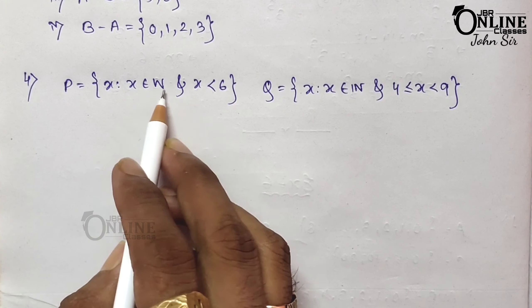Also verify: N(A union B) = N(A minus B) + N(B minus A) + N(A intersection B). So 2 + 3 + 5 = 10. Left hand side equals right hand side — it's proved.